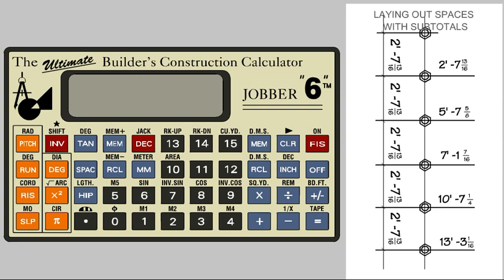We have a series of bolts that are to be laid out using a spacing of 2 feet, 7 inches, and 13 sixteenths center to center. We need a subtotal dimension for each bolt spacing.